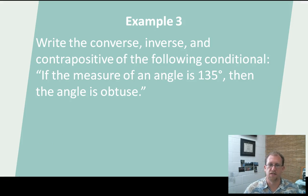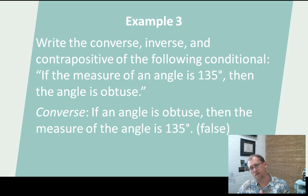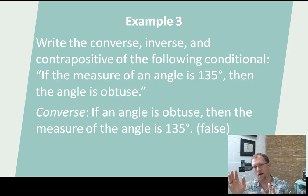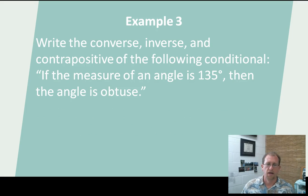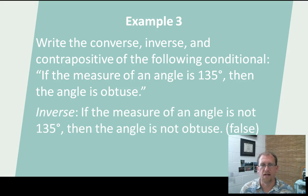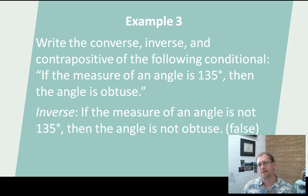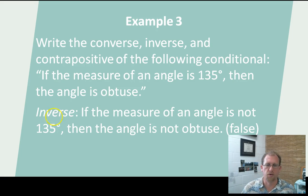Some examples: write the converse, the inverse, and the contrapositive of the following conditional. If the measure of an angle is 135 degrees, then the angle is obtuse. Converse just switches the order: if the angle is obtuse, then it's 135 degrees. We understand that's not always true, because 135 degrees is just one of many obtuse angles — it could be 160 degrees or 94 degrees. Converses often don't bear out the same truth values as their conditional statements. Inverse: if the measure of an angle is not 135, then the angle is not obtuse. Again, that does not always carry out — it's a false statement because if the angle is 132 degrees, it's not 135 but it is still obtuse.